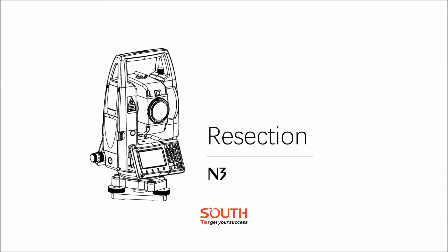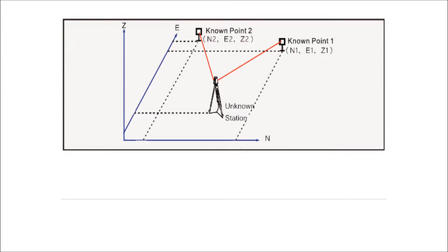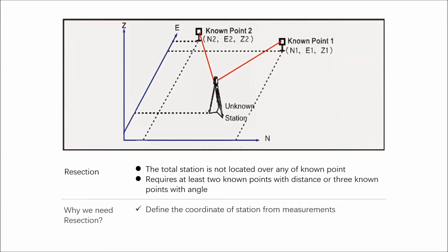This video will give an overview of how to set up an N3 total station using resection method. The application resection is used to determine the instrument position from measurements to a minimum of 2 known points and a maximum of 7 known points. It requires at least 2 backsight points with distance measurement or 3 backsight points with angle measurement.